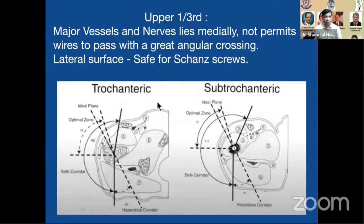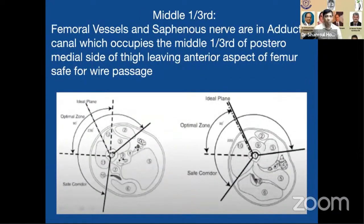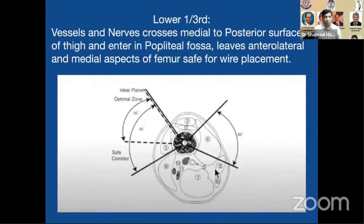We can divide the femur into upper third and lower third, identifying the ideal plane, the optimal zone, the safe corridor, and the hazardous corridor. This applies to the trochanteric and subtrochanteric area, the middle part, and the lower part.